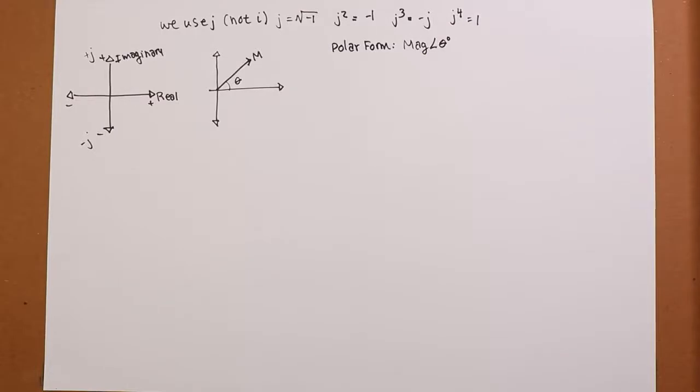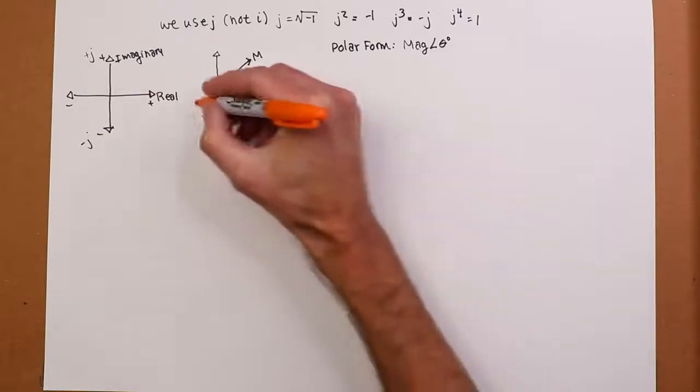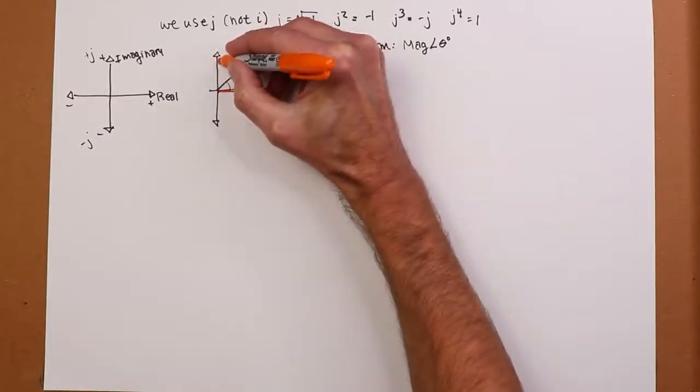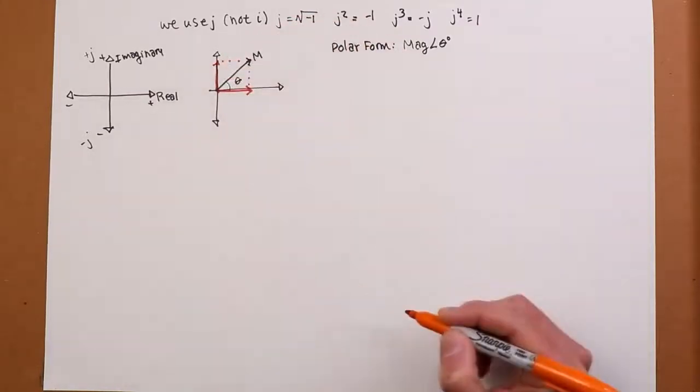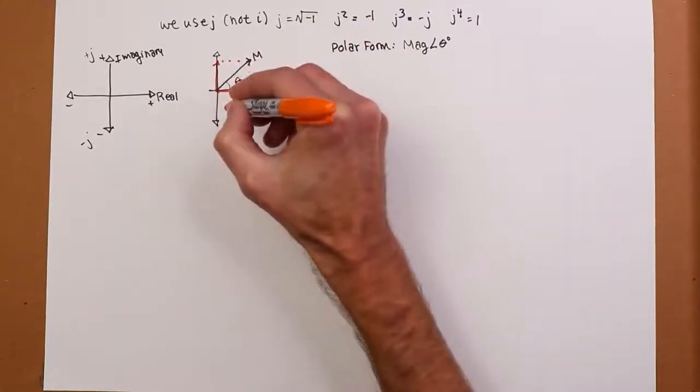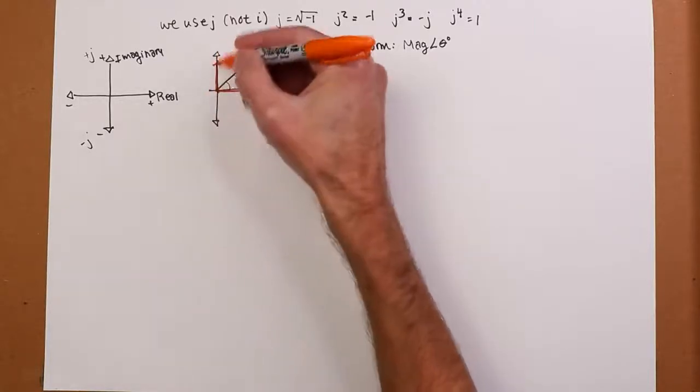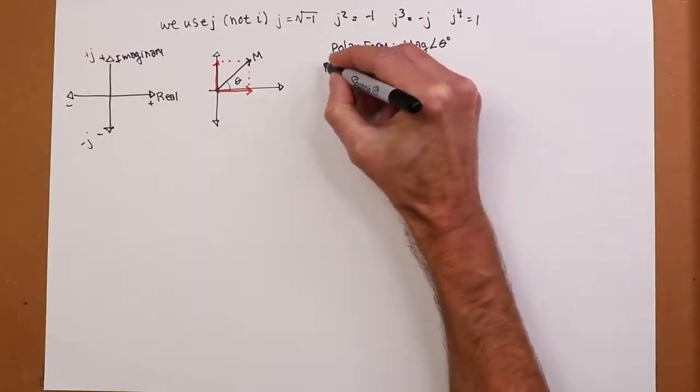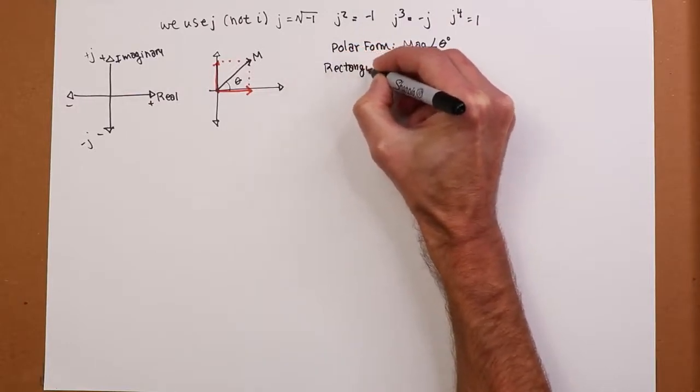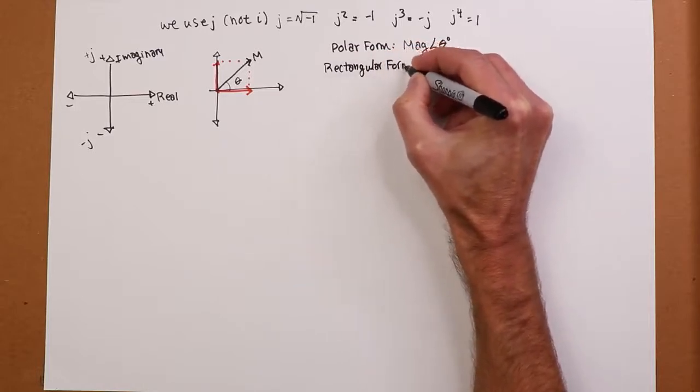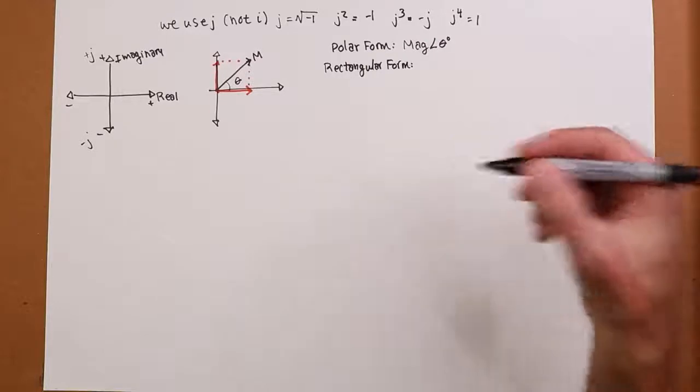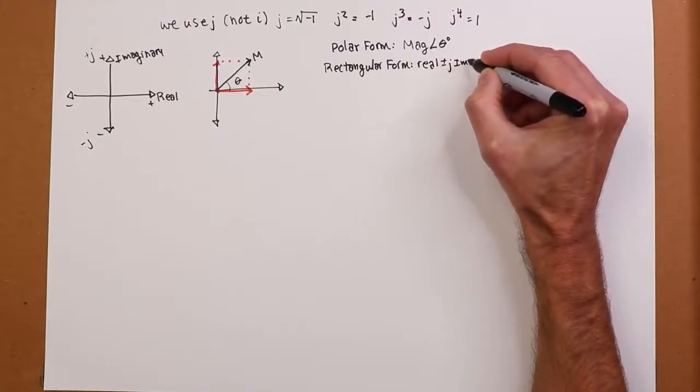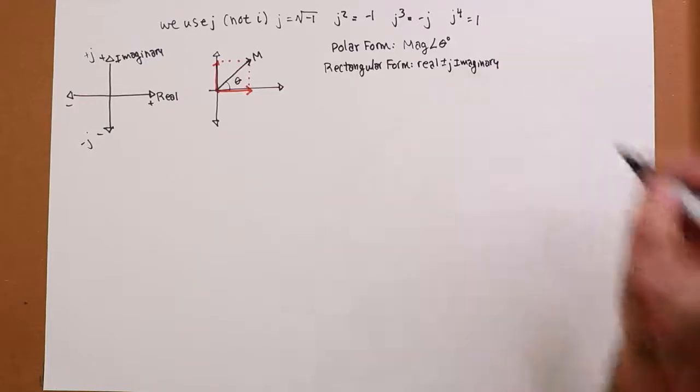But we can also see that this is made up of components. I have a component on the real axis - we would call this piece the real part. And this piece we would call the imaginary part. So that we refer to as rectangular form. We would write that typically as a real plus or minus an imaginary. We usually just put the reals first.